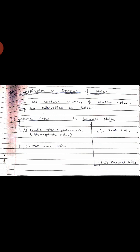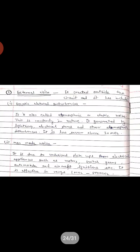The classification of noise sources is as follows. Random noise is classified into two categories: external noise and internal noise. External noise has two types: atmospheric noise and man-made noise. Internal noise is categorized into two parts: shot noise and thermal noise.